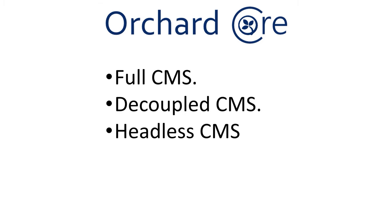Orchard CMS supports multiple deployment strategies. As a full CMS, the website uses a theme and template to render content with little or no custom development. As a decoupled CMS, the site starts off blank and you create all templates using Razor Pages or MVC actions, accessing content via the content services. As a headless CMS, the site only manages content and you create a separate application that fetches content using GraphQL or REST APIs.